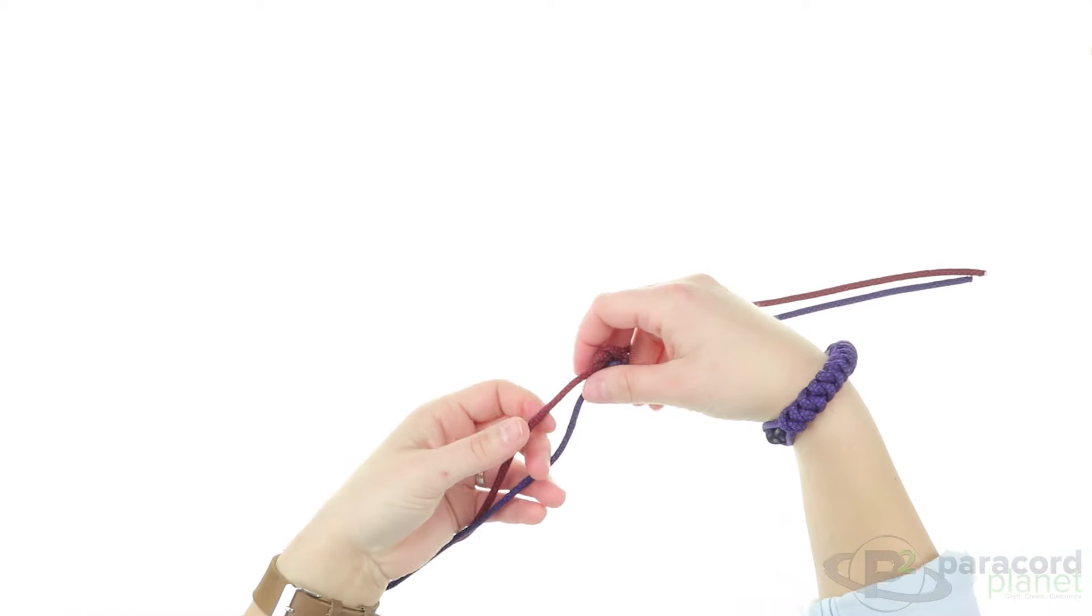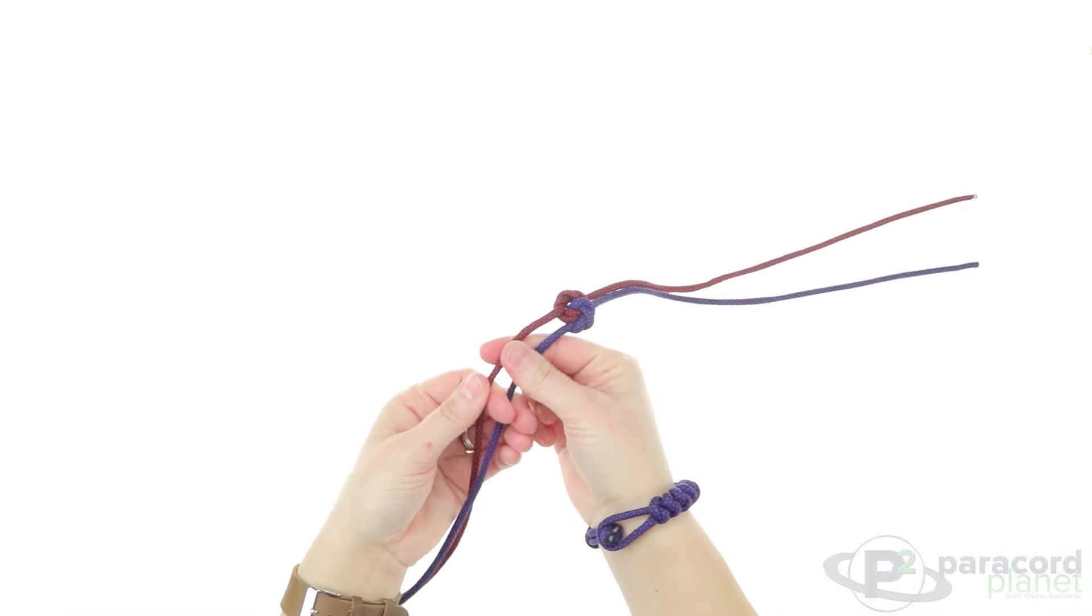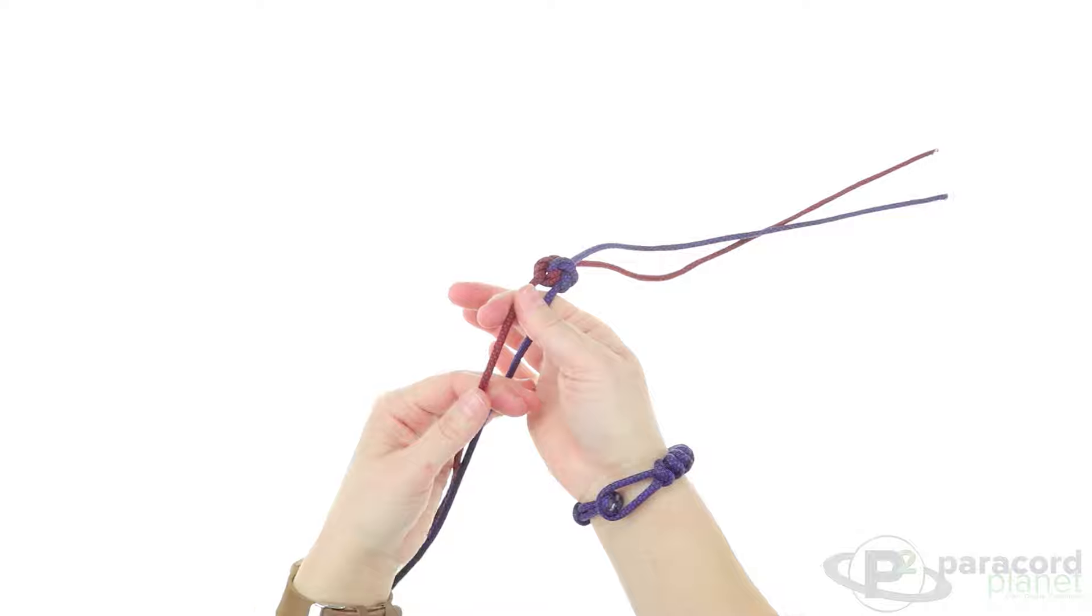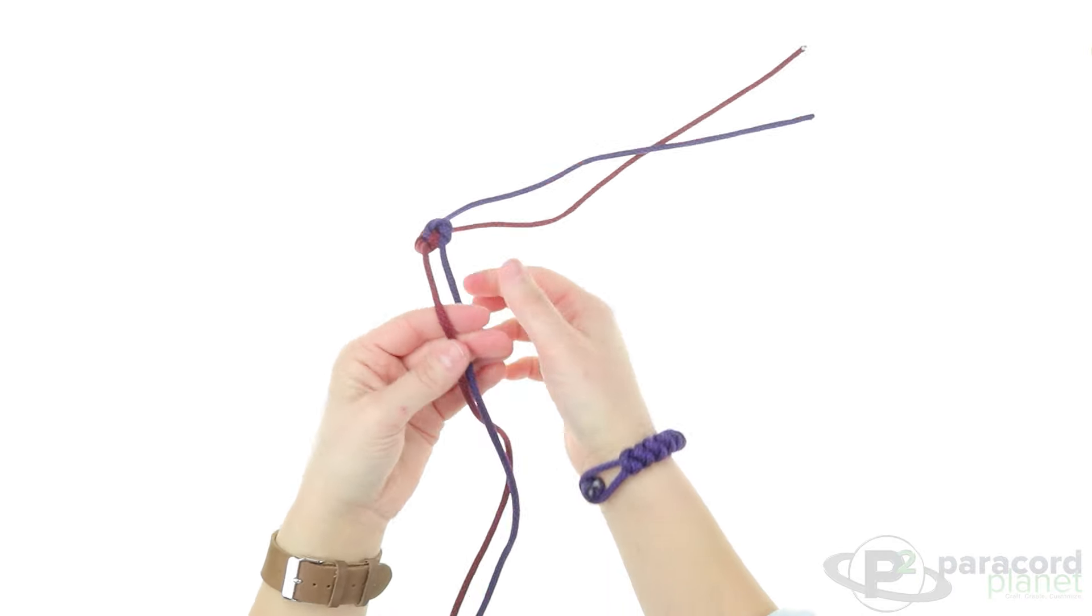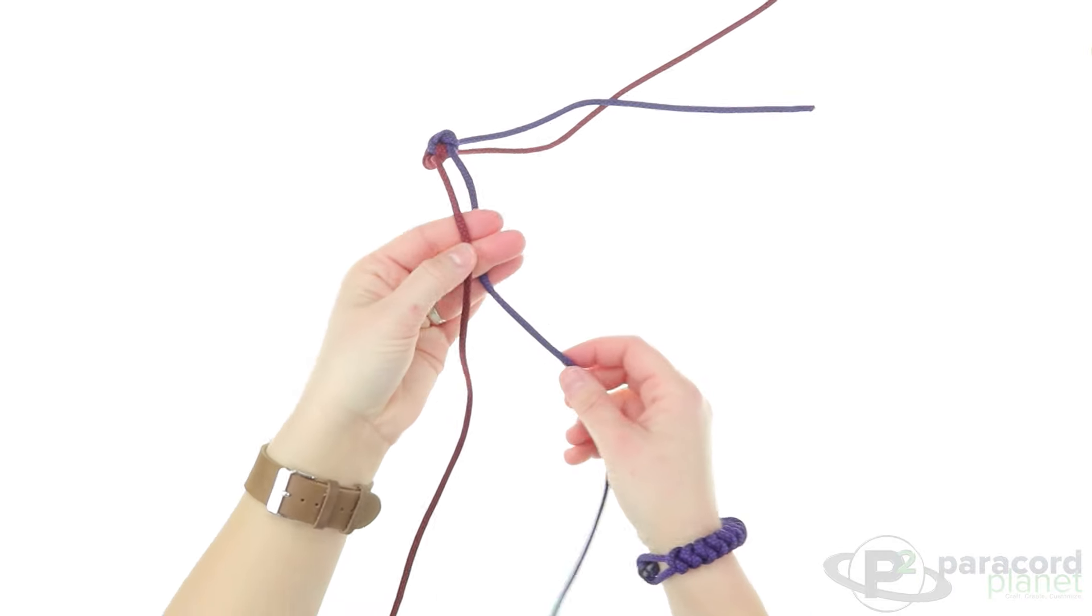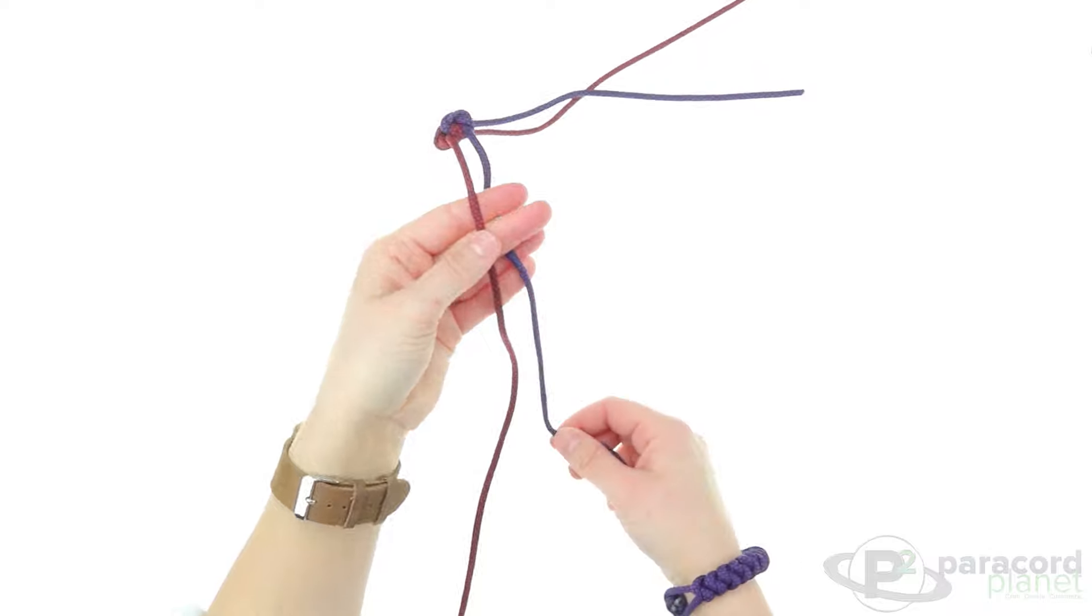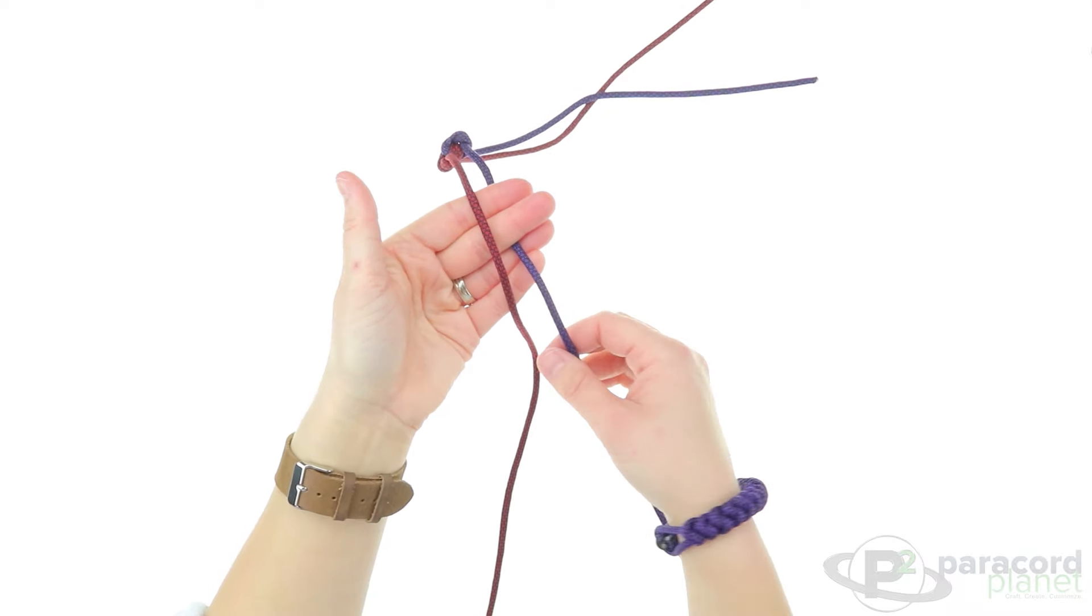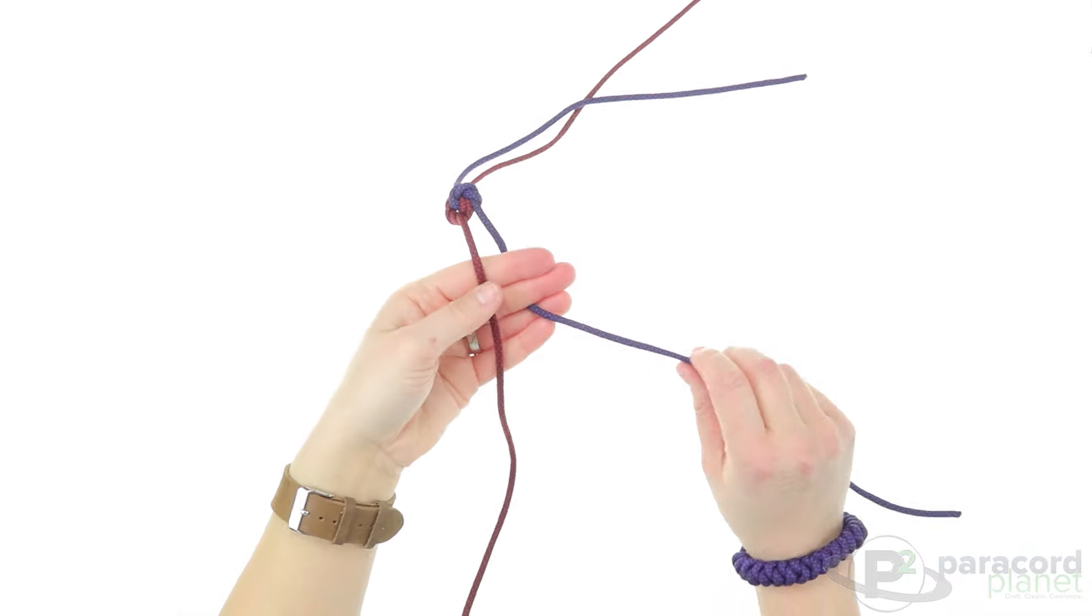To do the diamond knot, you want to go up a little bit closer towards the first knot here, but you will want of course a little bit of room there. Simply take your bottom cord between your two fingers there and make a loop.